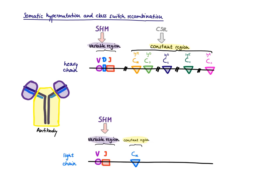What does class-switch recombination do to the antibody? As the name implies, you switch the antibody class. The antibody class is defined by the heavy chain isotype. This has nothing to do with the light chain—it only affects the heavy chain because only the heavy chain determines the antibody class.